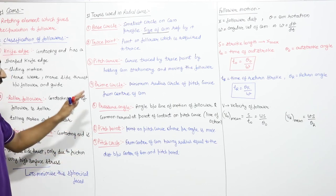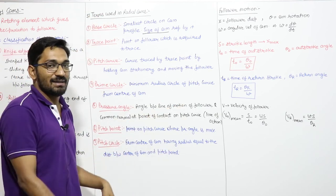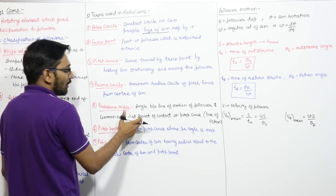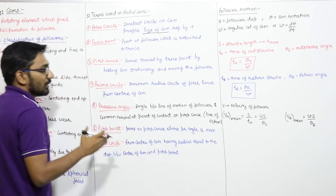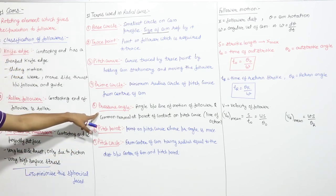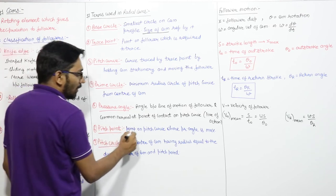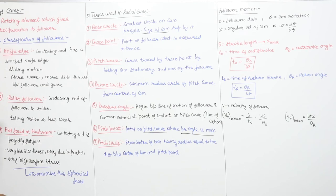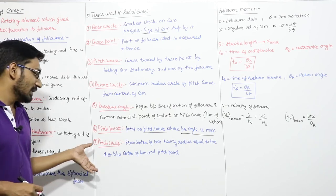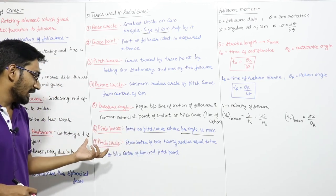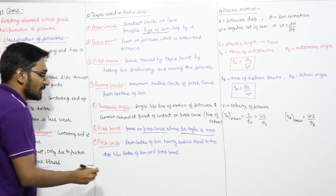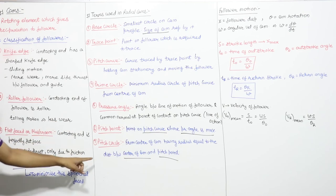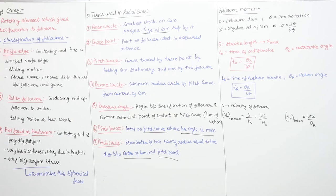Next is the pitch point — the point on the pitch curve where the pressure angle is maximum. The pitch circle is drawn from the center of the cam with radius equal to the distance between the center of the cam and the pitch point. These are the various terminologies used in radial cams.